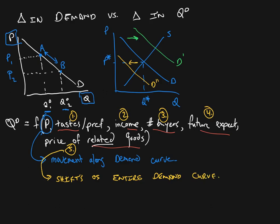A change in price only results in movement along the demand curve, whereas a change in the other factors — the determinants of demand — shifts the entire demand curve. We call those an increase or decrease in demand. This rightward shift is an increase in demand; a leftward shift is a decrease in demand. Movement from point A to point B is an increase in quantity demanded as a result of a change in price, and movement from B to A is a decrease in quantity demanded as a result of an increase in price. That's really the difference between the two.